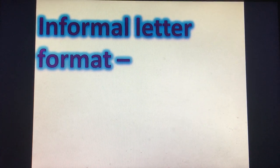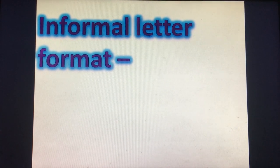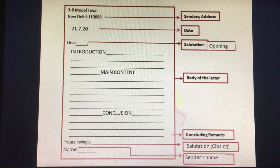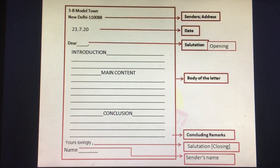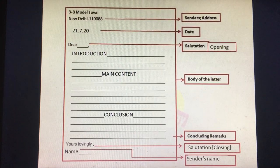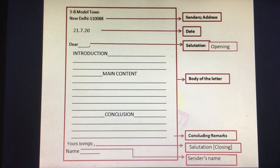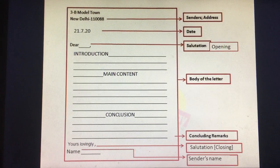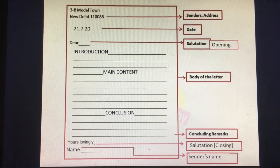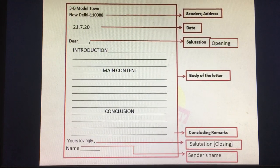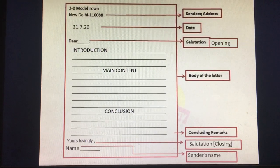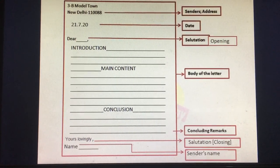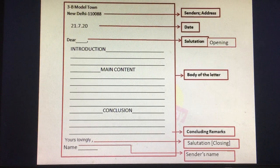First let me discuss and after you have understood, then you write it down. This is the format of the informal letter. An informal letter has five main points. Heading includes sender's address. Mention full address with pincode. Your address can be two lines or three lines. For example: 3B Model Town, New Delhi 110088.